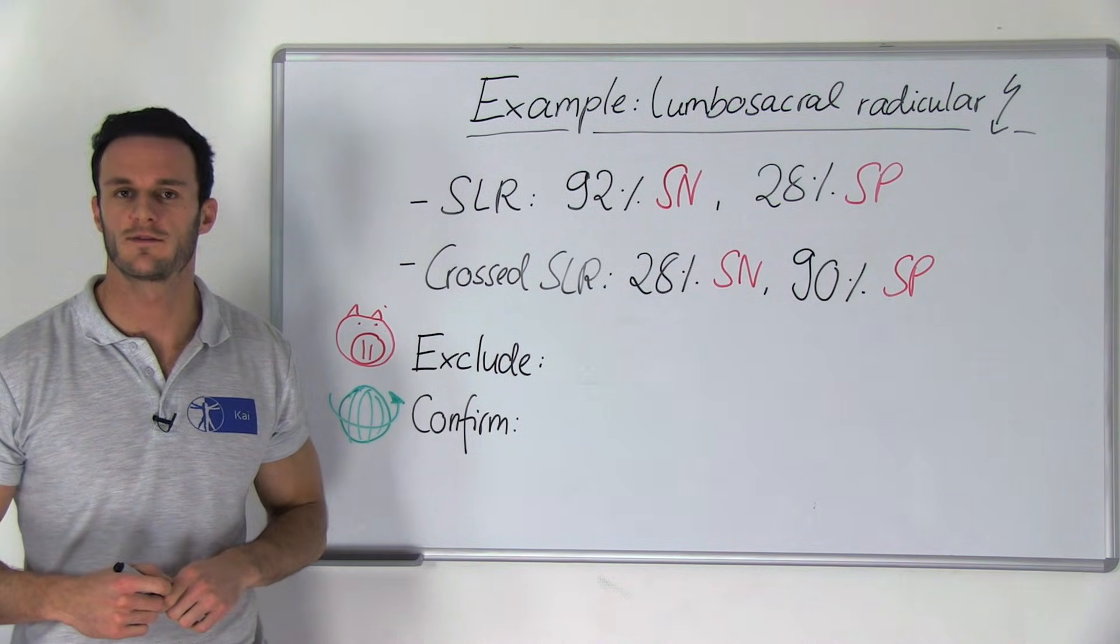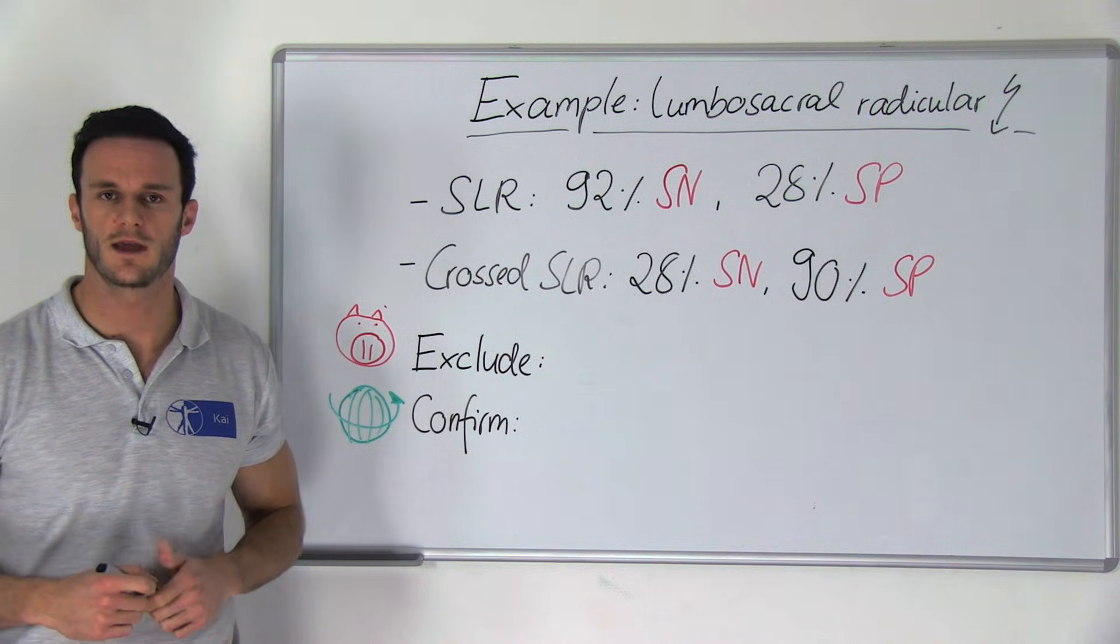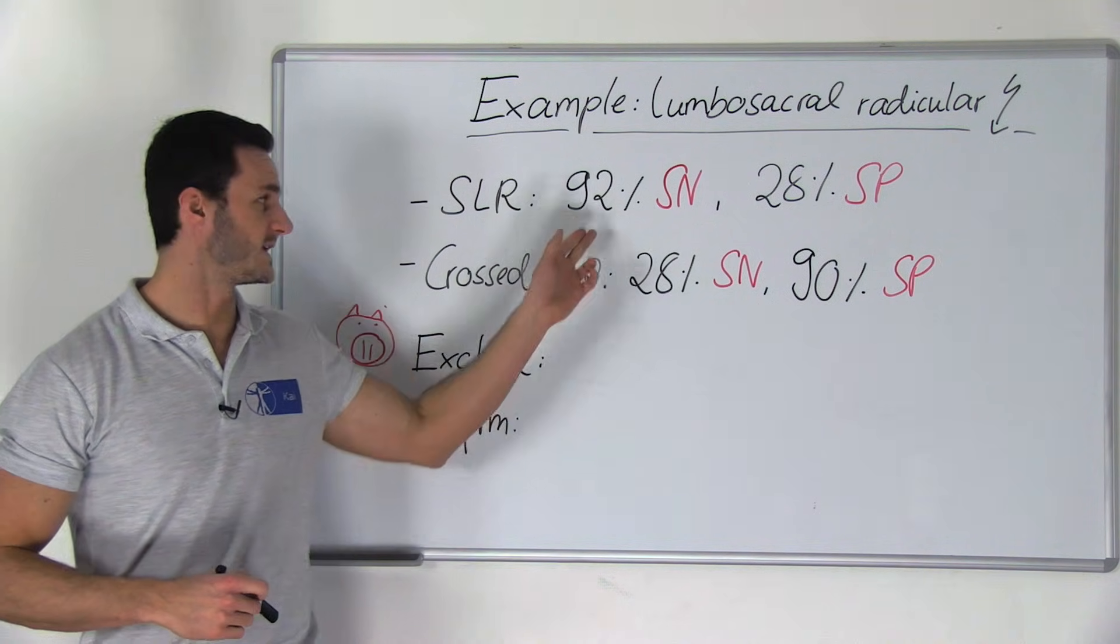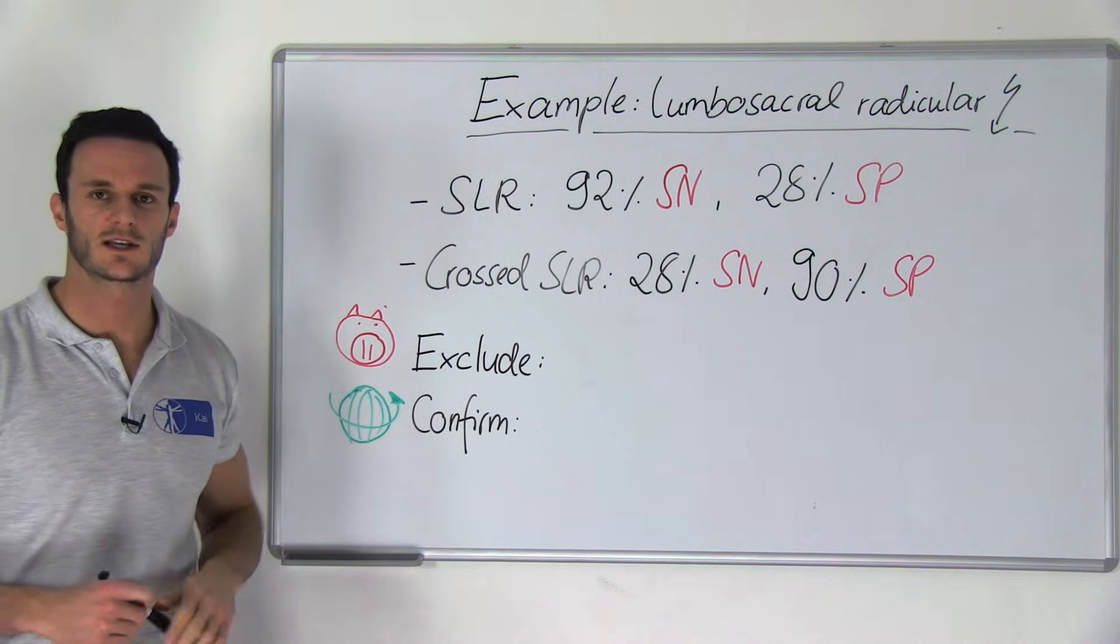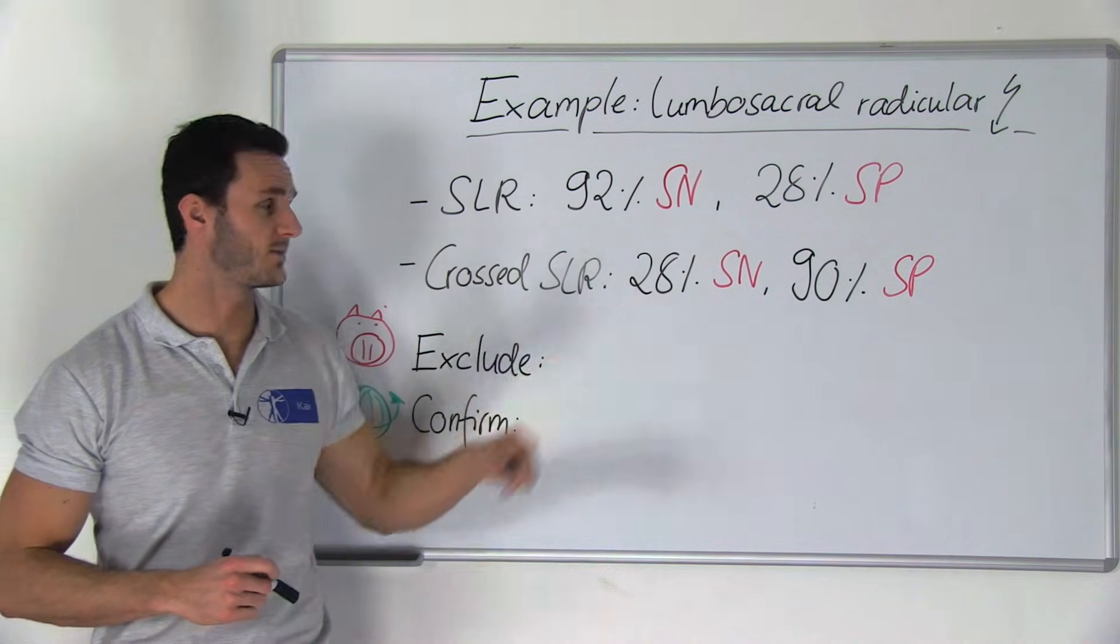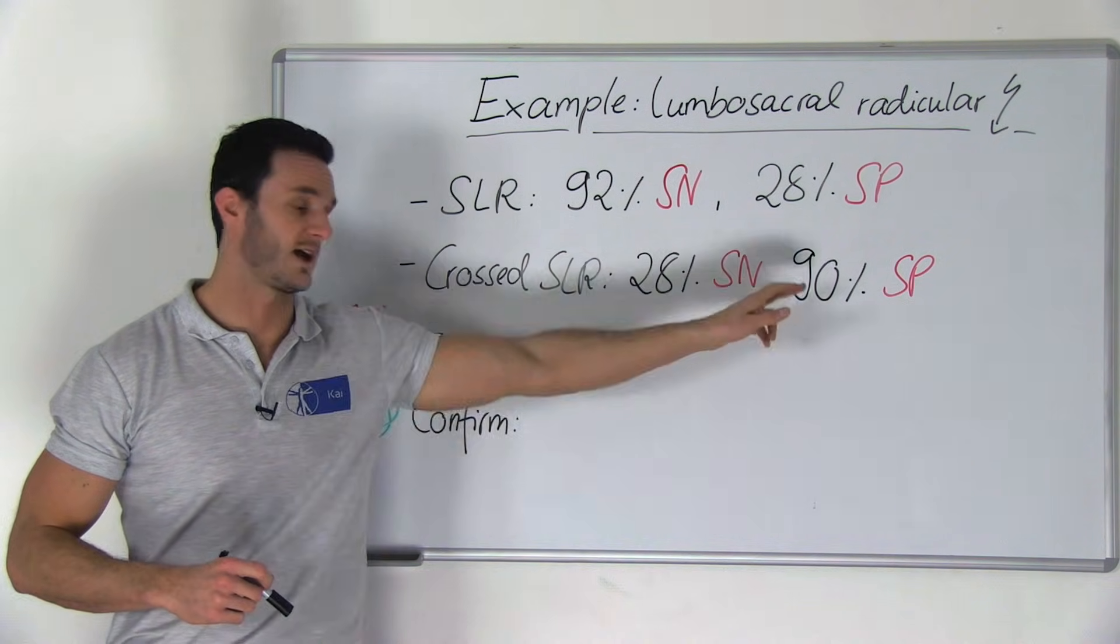According to a review by van der Windt et al. in the year 2010, the SLR has a sensitivity of 92% and a specificity of 28%, and the crossed SLR has a sensitivity of 28% and a specificity of 90%.